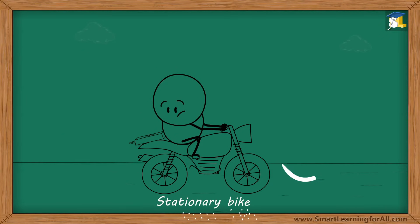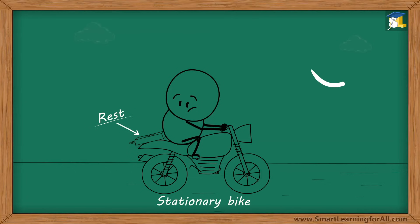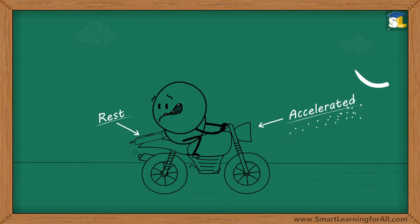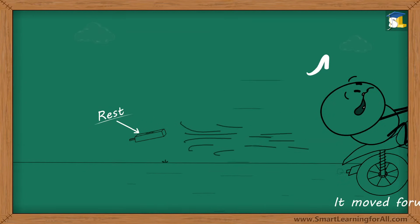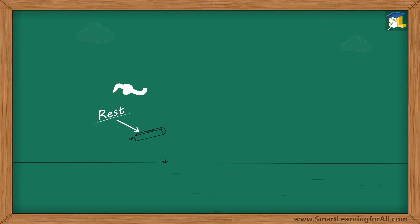When the bag was on the stationary bike, it was at rest. Now, when the bike was accelerated suddenly, it moved forward. But the bag being at rest did not move due to inertia of rest and hence it fell down again.